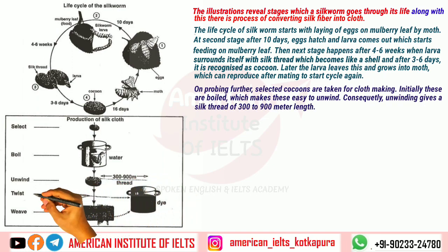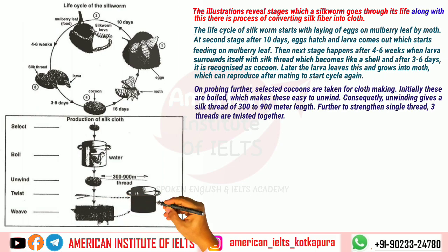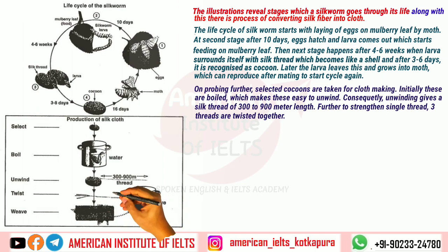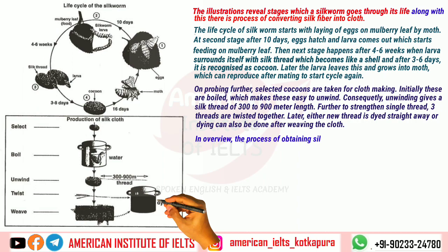Further, to strengthen the single thread, three threads are twisted together. Later, either the new thread is dyed straight away, or dyeing can be done after weaving the cloth. So the overall process of obtaining silk and converting it into cloth is a simple practice.